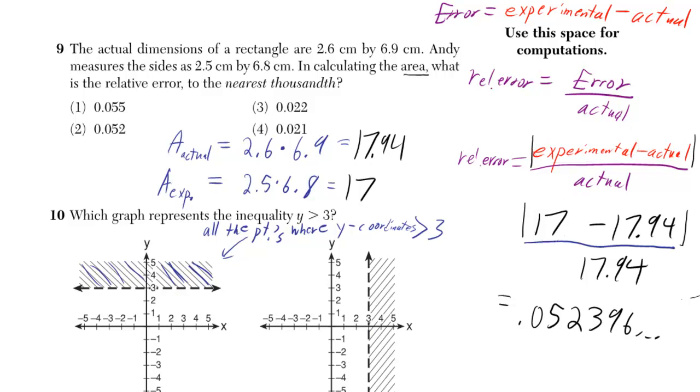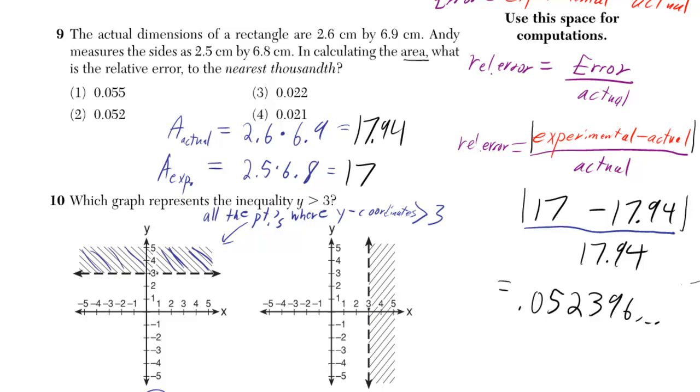Then when we see 17.94, we plug that in where we see actual. So we plug that in right there, and also right there because we saw actual there as well.